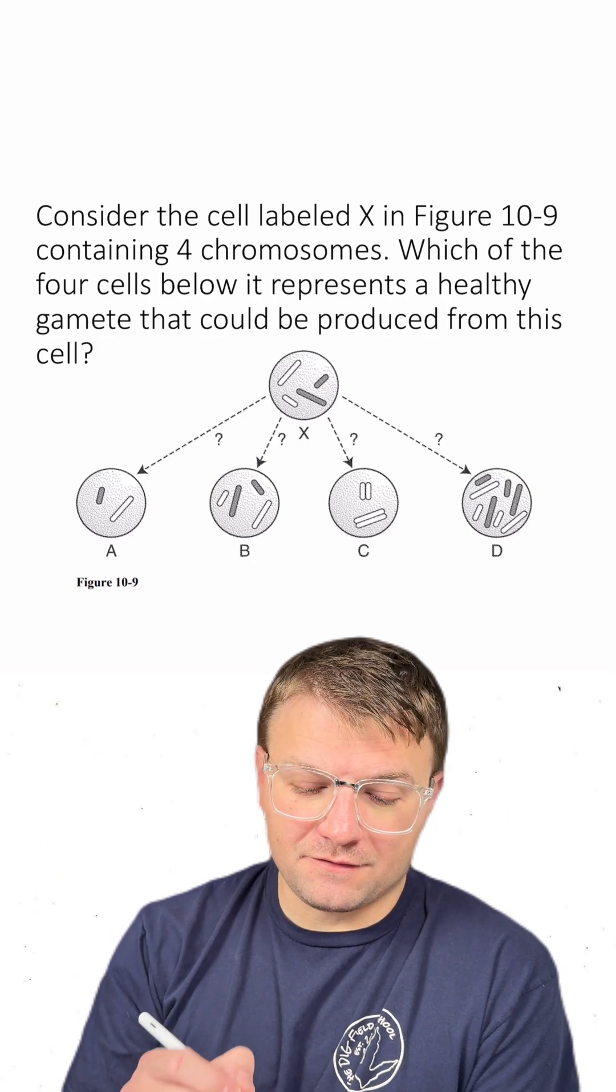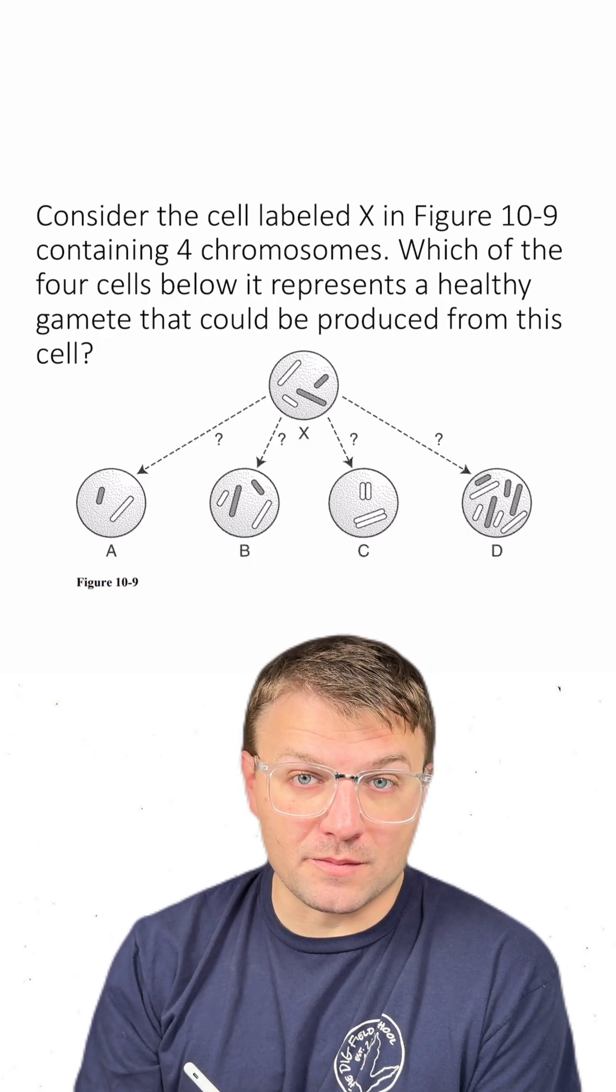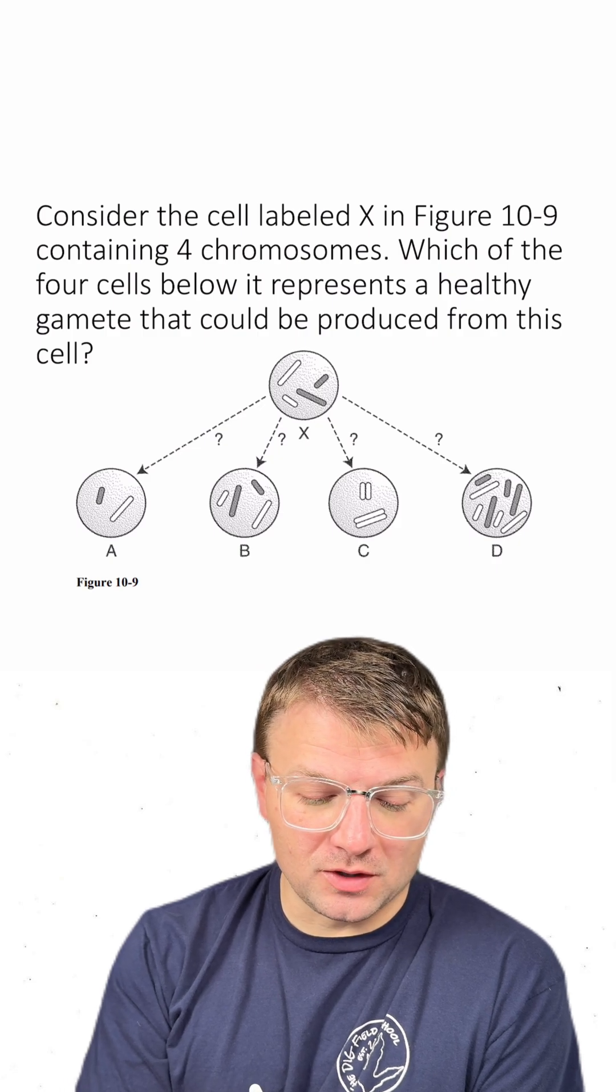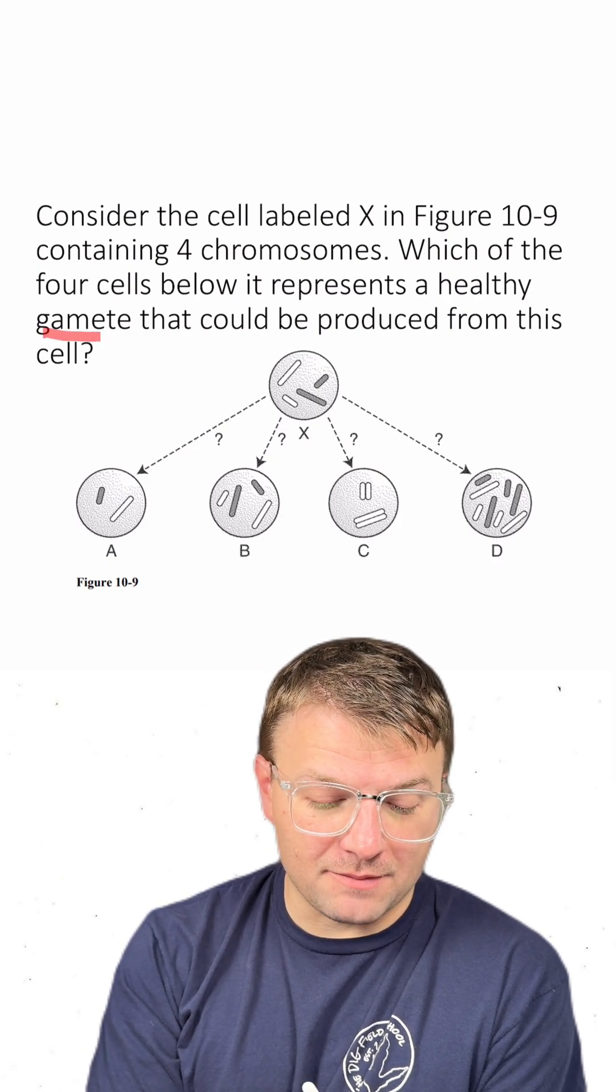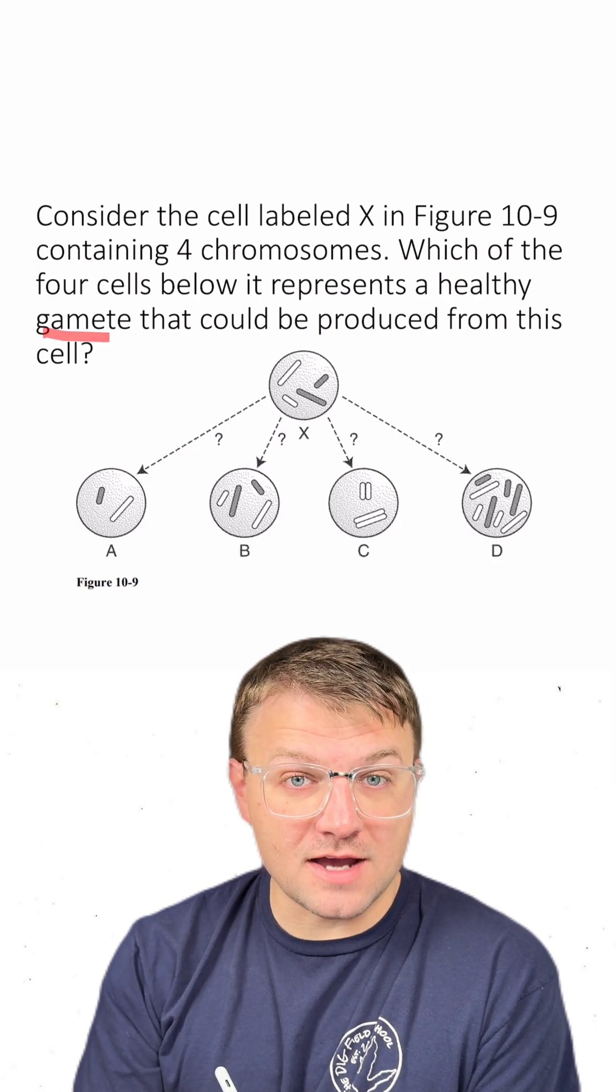Consider the cell labeled X in figure 10-9 containing four chromosomes. Which of the four cells below it represents a healthy gamete that could be produced from this cell?